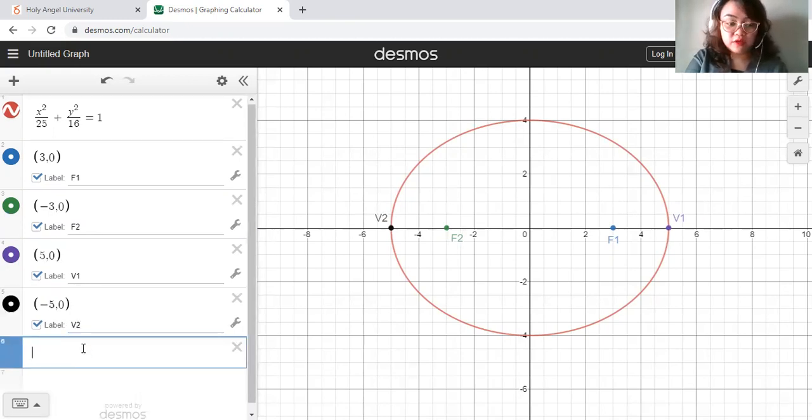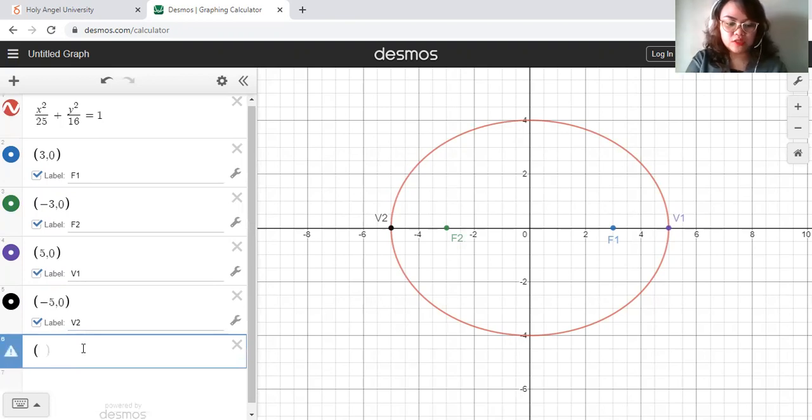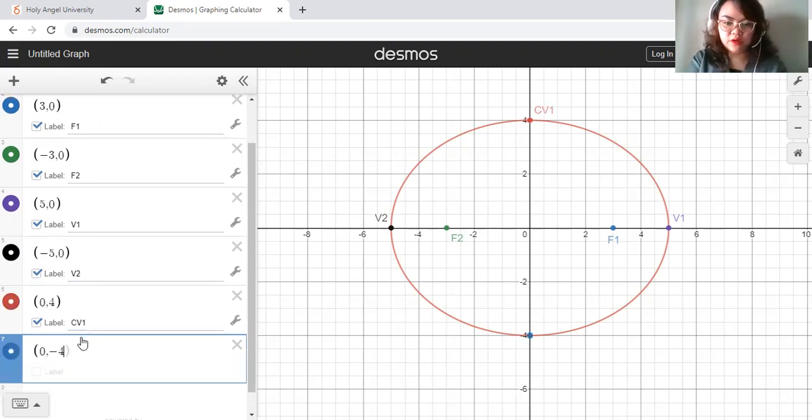Next would be the co-vertices. Co-vertices would be 0, 4, there at the end of the minor axis, CV1. And one more would be 0, negative 4, the blue dot at the other end would be CV2. And that's it for your ellipse.